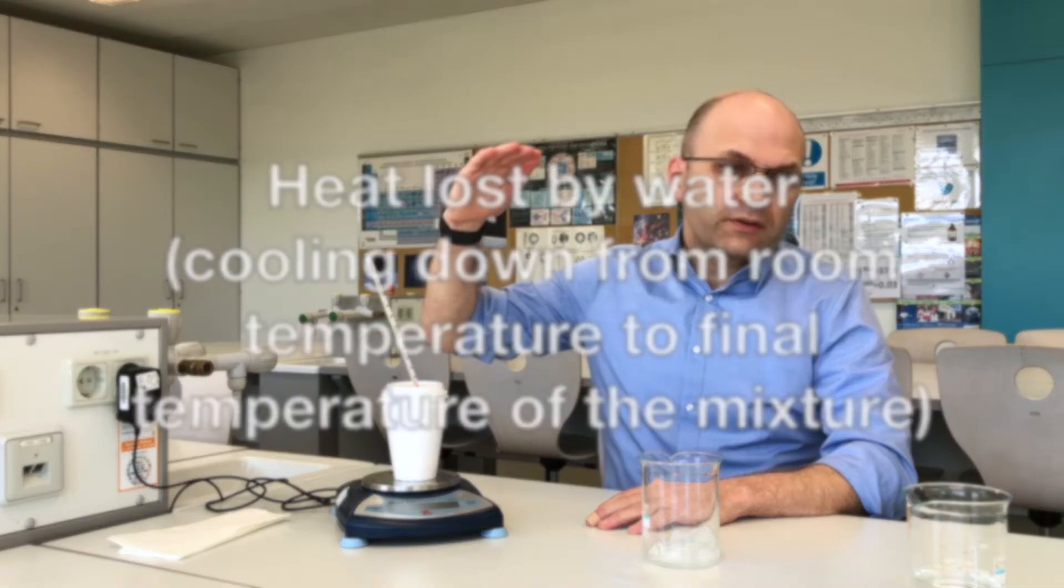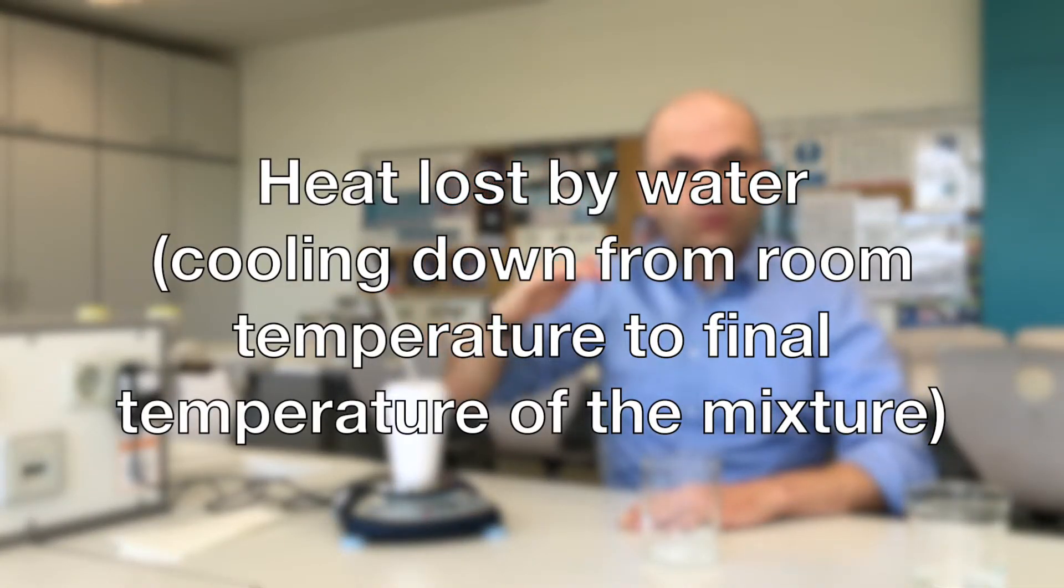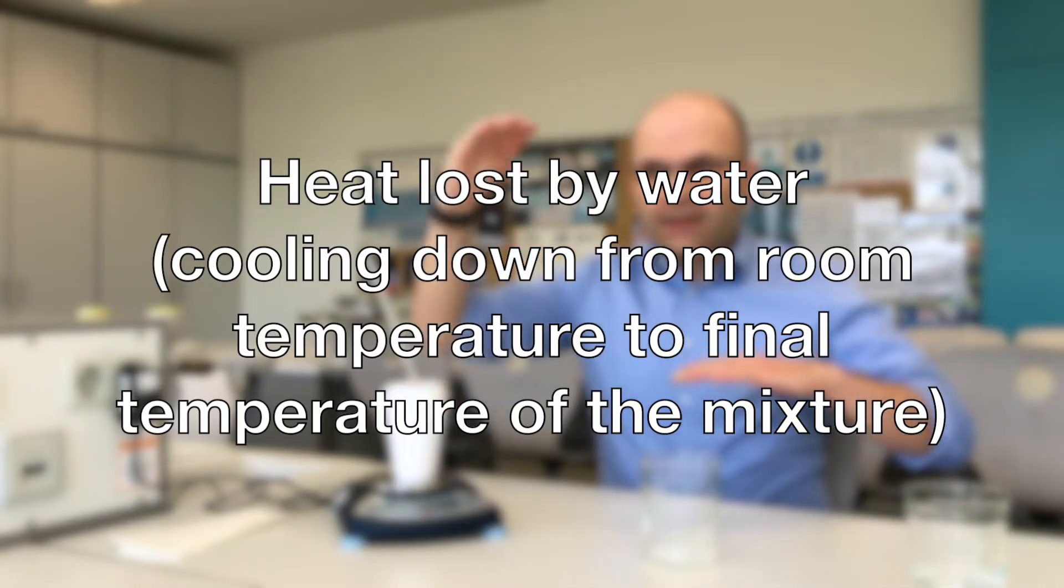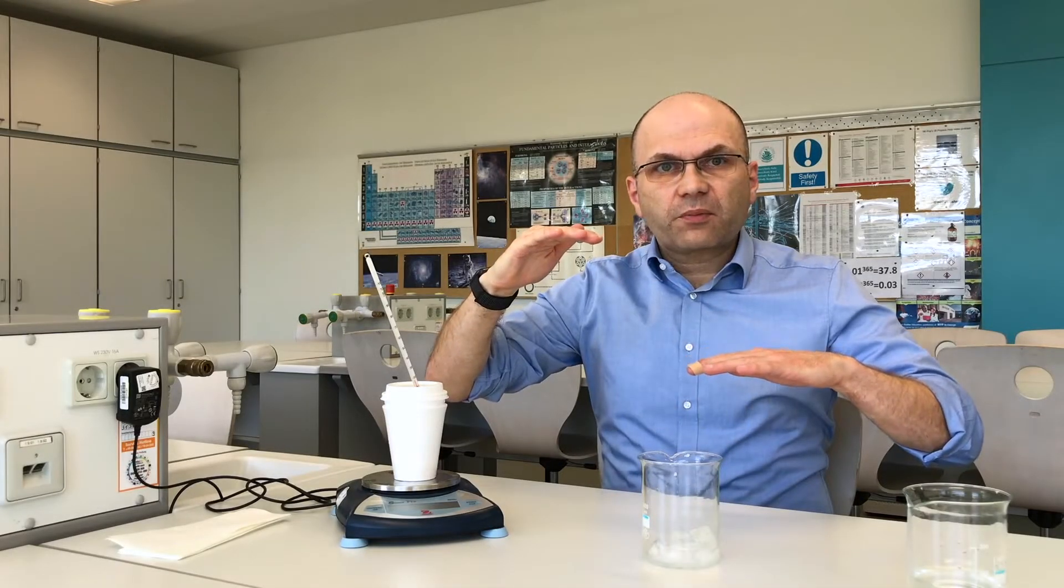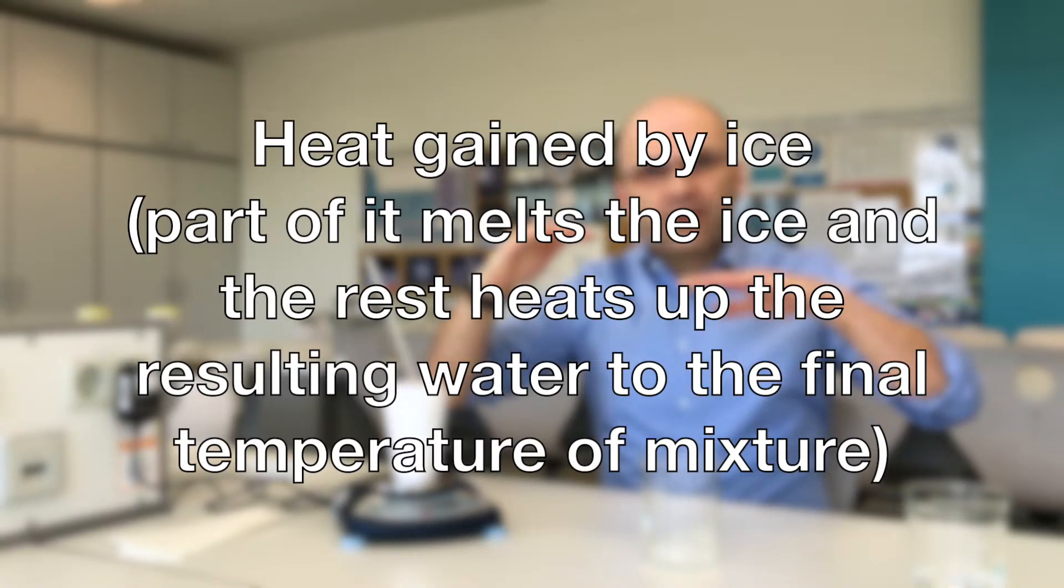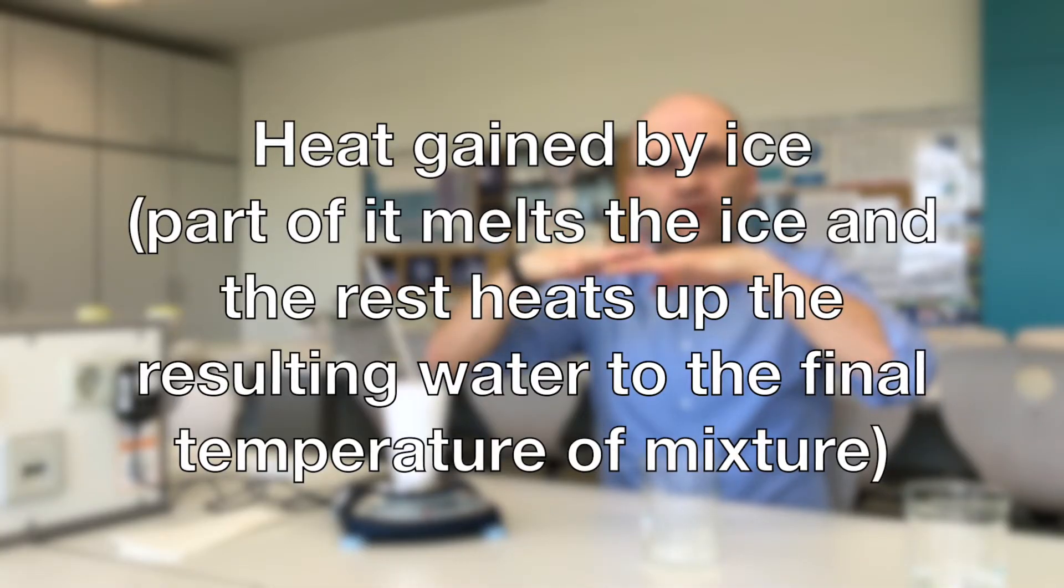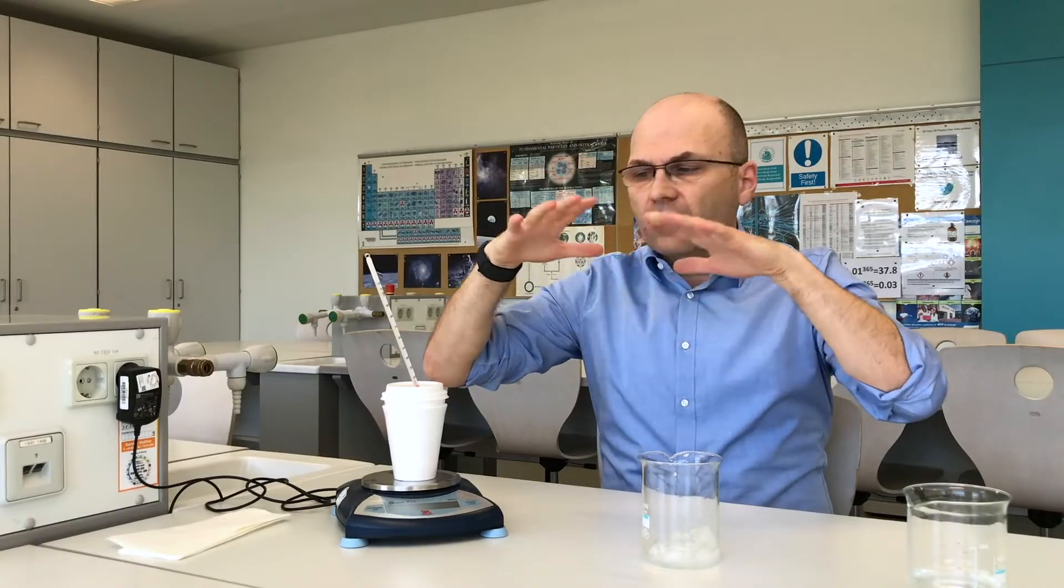What happens inside the cup is that the water that started at room temperature is now cooled down after we put the ice cube in and that heat is gained by the ice cube which first is melted so it turns from ice at zero into water at zero. And then that cold water is warmed up to the final temperature of the mixture until thermal equilibrium is being reached.